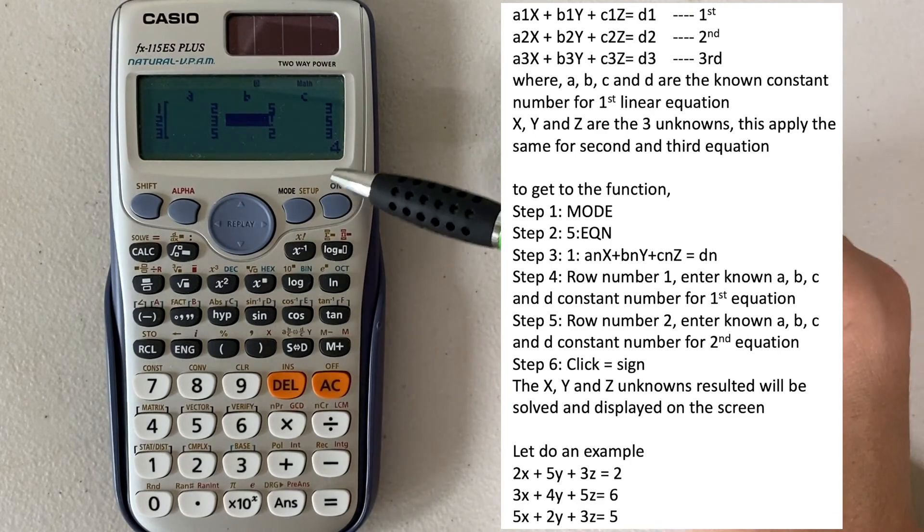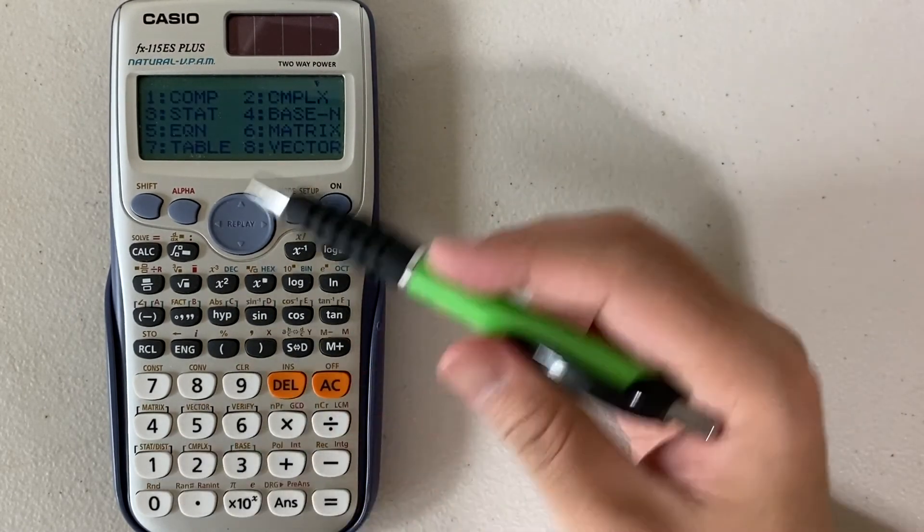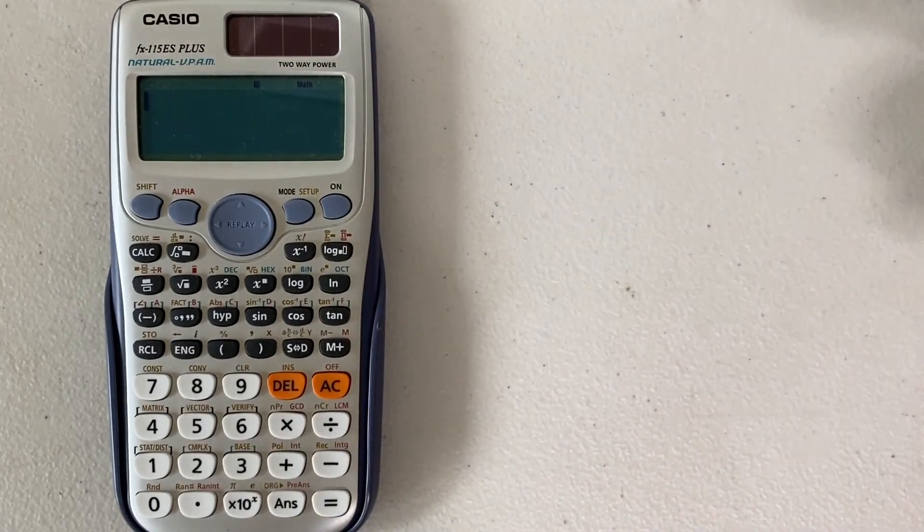So when you're done, what you need to do is go back to the calculation mode. Just press mode, 1 for computation, press 1. Here you're back to the computation mode.